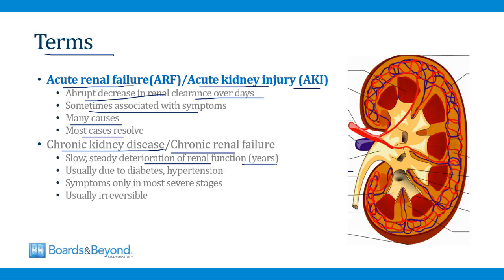In contrast, when we say a patient has chronic kidney disease or chronic renal failure, we are referring to a slow, steady deterioration of renal function that occurs over years. I talk about chronic kidney disease in another video, but it's usually caused by diabetes or hypertension. Patients usually have no symptoms until they get to the most severe end stages, and this form of kidney disease is usually irreversible and in most cases it's progressive.